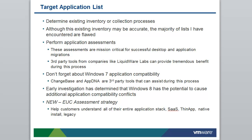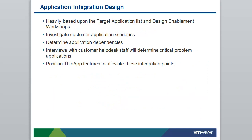After the target application phase, we work towards application integration design. This phase is heavily based on the target application list and the design enablement workshops. The primary goal is to investigate customer application scenarios, determine application dependencies, and — through interviews with customers and help desk staff — identify critical problem applications. This is often the most critical step because customers have tremendous pain around specific applications that won't integrate with or conflict with other applications. ThinApp can mold itself around those scenarios once you identify them.